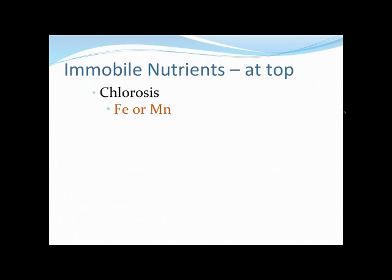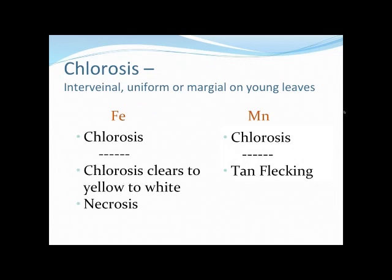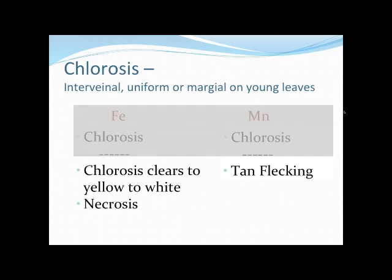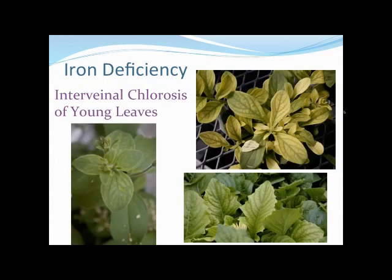Let's look at iron and manganese first. These symptoms are very similar, so we want to look at what's unique to each. For iron: interveinal chlorosis that clears to yellow or white, then necrosis. For manganese: tan flecking. Iron deficiency is probably the most common deficiency we see in greenhouses — that interveinal chlorosis of the young tissue, often associated with pH problems. Most of us who've grown petunias, Calibrachoa, or Gerbera daisies have probably seen iron deficiency at one time or another.